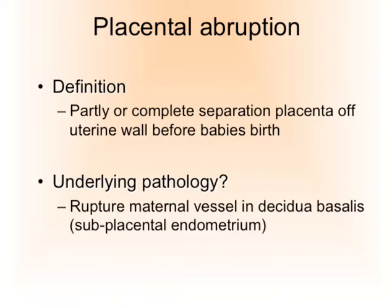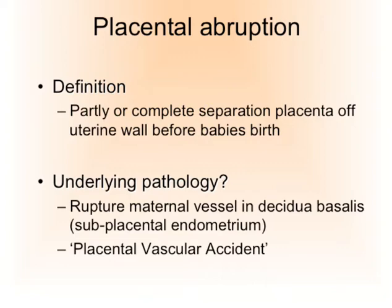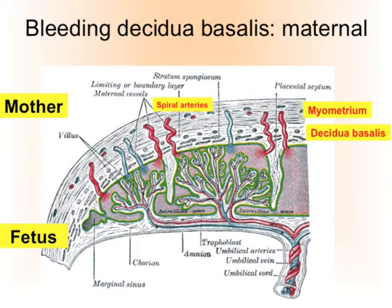As we may know from part one, the decidua basalis is the endometrium changed through pregnancy hormones, which lies under the placenta between the placenta and the myometrium. You could also argue that placental abruption is caused by a placental vascular accident — PVA — an abbreviation I made up myself.